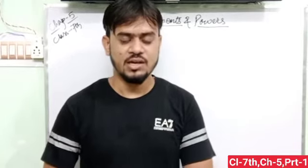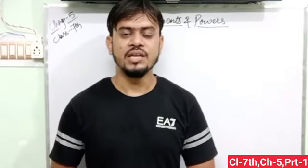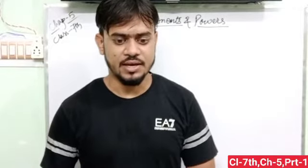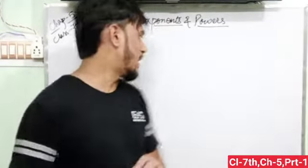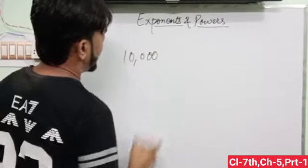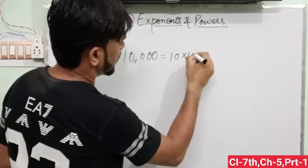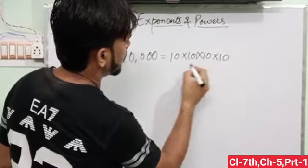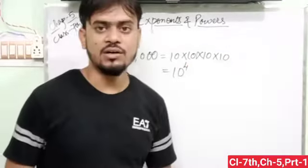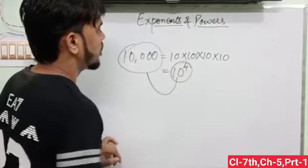Then what is exponents? When a large number is represented in a short form, that is called exponent. Just like when I have a number 10,000, then we can write 10,000 is equal to 10 into 10 into 10, that means 10 is to the power 4. So this number can be written in this short form.